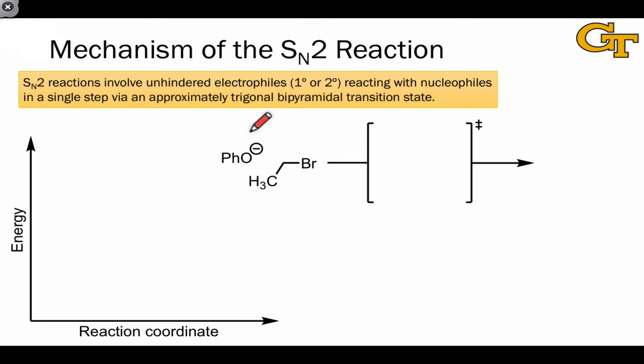The SN2 reaction tends to be more rapid for sterically unhindered electrophiles, for reasons that will become clear in a second. In an SN2 process, the nucleophile forms a bond to the electrophilic atom at the same time the leaving group, or nucleophuge, departs with a pair of electrons.